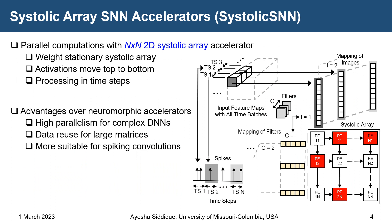Systolic array SNN accelerators are basically a 2D array of processing elements that process all computations in parallel. There is high parallelism in each core for systolic SNNs, giving them an advantage over neuromorphic accelerators. They are more suitable for systolic spiking convolutional neural networks because they have good accuracy compared to STDP algorithms for SNNs. We consider a wave-stationary systolic array where activations only move from top to bottom, processed in timestamps. A key advantage is that data can be reused when we have large matrices.